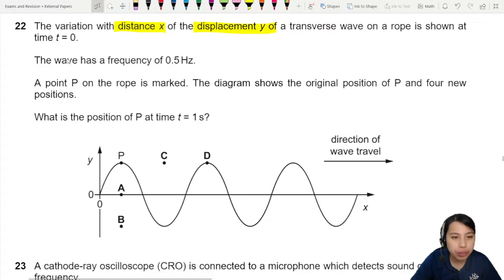Alright so the wave has a frequency of 0.5 Hertz. That's going to be our f. And the point on the rope is marked. The diagram shows the original position of P and four new positions. What is the position of this point at time t equals 1?